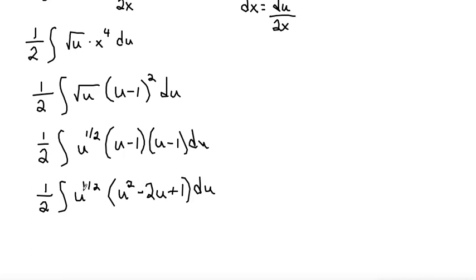So that would be 1 half integral of u to the 1 half times u squared. We need to take 1 half and add 2, so that would be u to the 1 half plus 4 over 2, which would be u to the 5 over 2, minus, now I have 2 and then 1 half plus 1 would be 3 halves, u to the 3 halves. And then u to the 1 half times 1 would be plus u to the 1 half du.